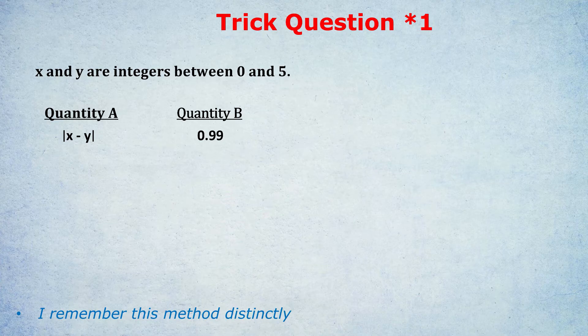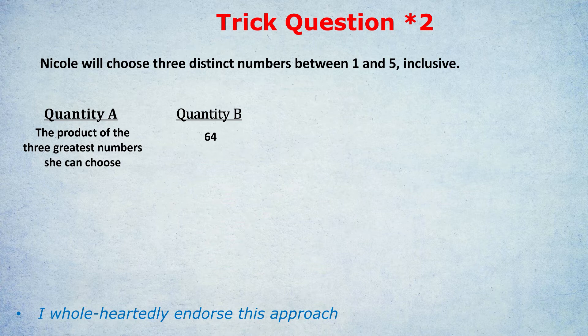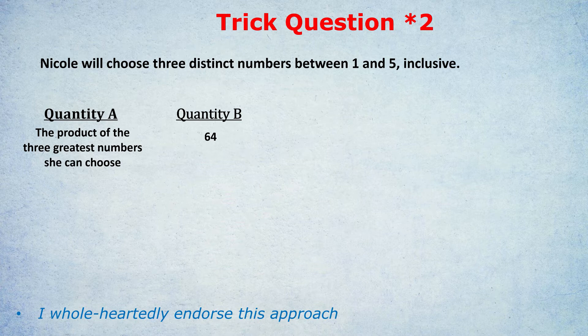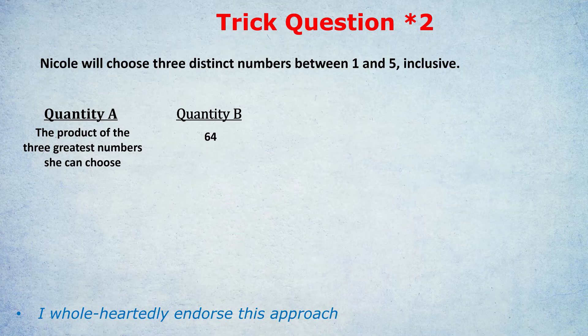So let's move on to the next trick question. Nicole will choose three distinct numbers between 1 and 5, inclusive. Quantity A is the product of the three greatest numbers she can choose, and Quantity B is 64.